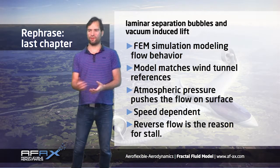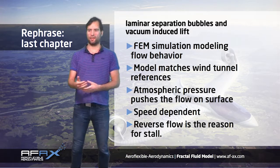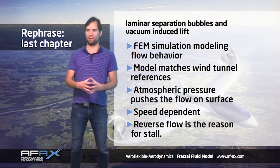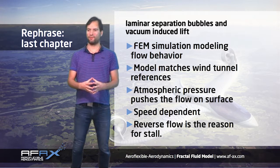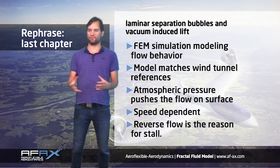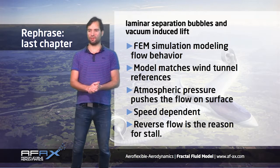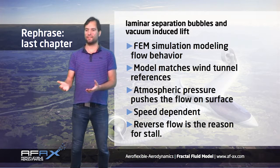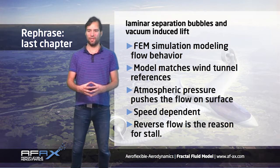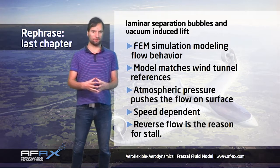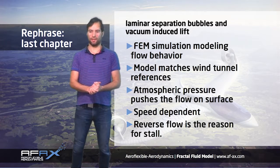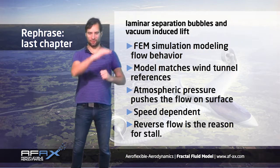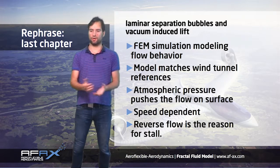Let me briefly rephrase the content of the last chapter. In the last chapter I developed a finite element simulation to model flow behavior, and compared the model to wind tunnel experiments, with the final conclusion that the reason for lift is the atmospheric pressure, which accelerates the flow back to the surface and deflects it. I showed that this feature has certain constraints based on the inertial effects of air. This causes lift to happen only at low angles of attack. The more the angle rises or speed drops, the more likely the air can manage to revolve inside the low pressure area. Ergo, lift is an unstable condition caused by mass inertia.